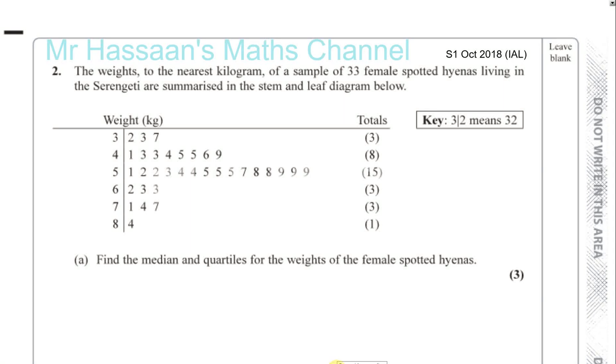Okay, now we have question number two from S1, October 2018, International A-Level. Here we have a stem and leaf table or diagram. The weights to the nearest kilogram of a sample of 33 female spotted hyenas living in the Serengeti are summarized in the stem and leaf diagram below. So you've got the weights and the totals on the side and the key here tells us that 3, 2 means 32. It could be 3.2 as well. Here it clarifies that the stem part is the tens and the leaf part is the units.